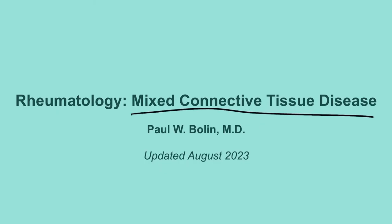We're going to move on to one of the black sheep of the connective tissue disorders - mixed connective tissue disease. Before you watch this, I want you to watch all my other videos on connective tissue diseases: lupus, polymyositis, rheumatoid arthritis, and Sjogren's syndrome. This disease incorporates a little bit of each of them, making it a culmination of all those disorders. It is very difficult to diagnose and fortunately rare, but you'll want a surface-level understanding because it does get tested.